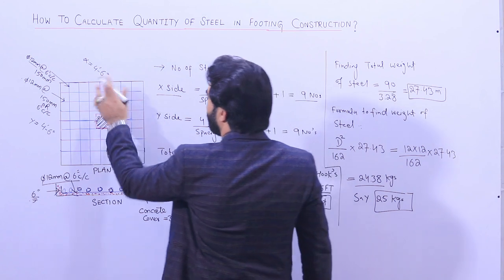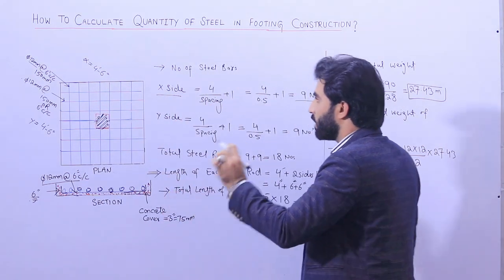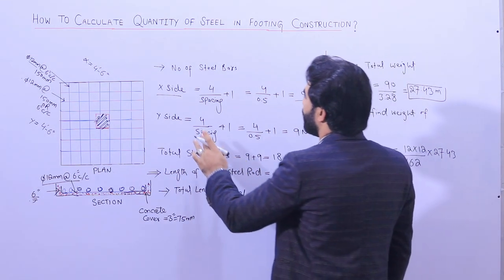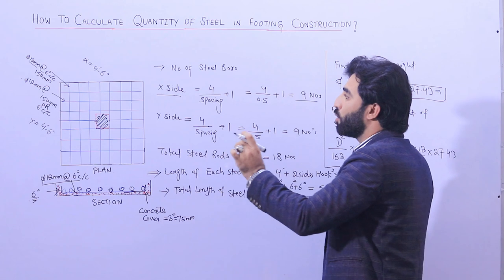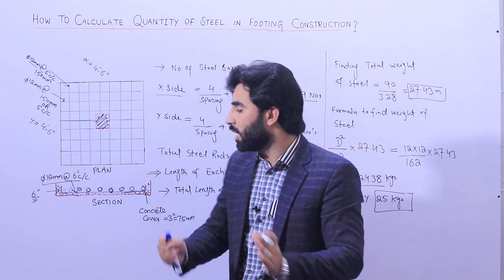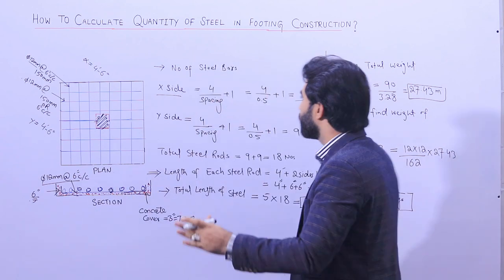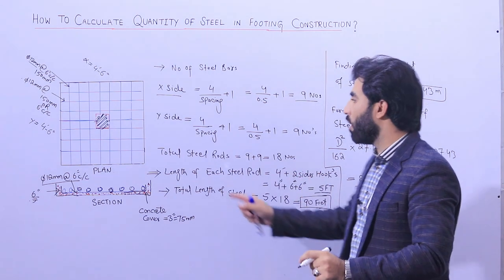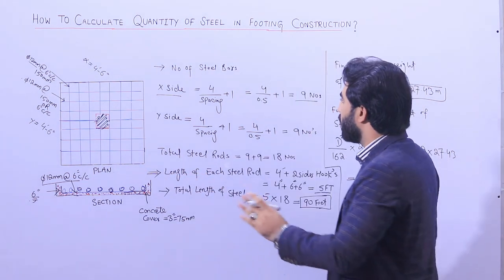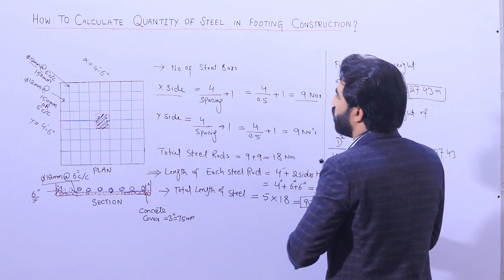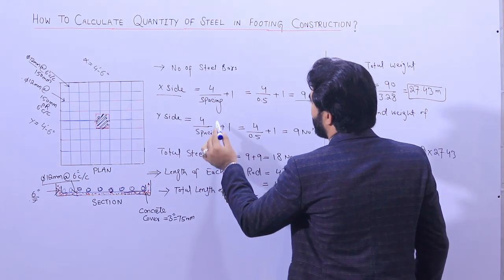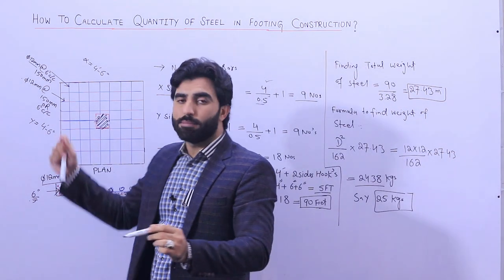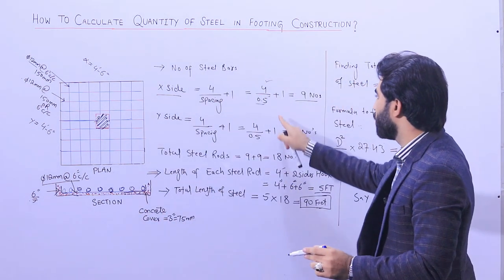The number of steel rods for the X side: the mesh length is 4 feet. We find how many rods are required to cover that 4-foot length. The formula is: Number of bars = Length ÷ Spacing + 1. The plus one accounts for the first steel rod, which has no space before it. So: 4 feet ÷ 0.5 feet (since 6 inches = 0.5 feet) + 1. This gives us 9 numbers of steel rods in the X direction.